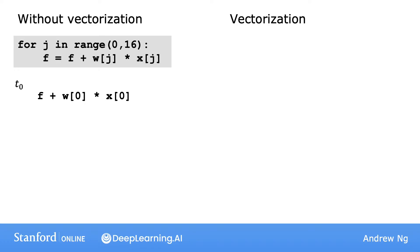On the first time step, which I'm going to write as time 0 or t0, it first operates on the values at index zero. At the next time step, it calculates values corresponding to index one, and so on until the 15th step where it computes that. In other words, it calculates these computations one step at a time, one step after another.